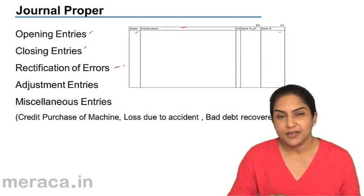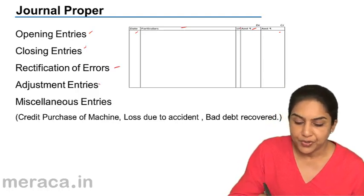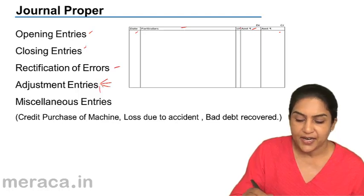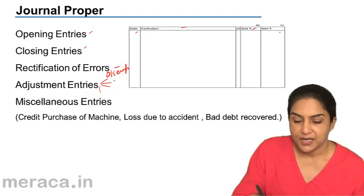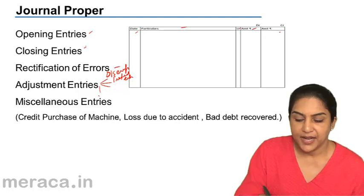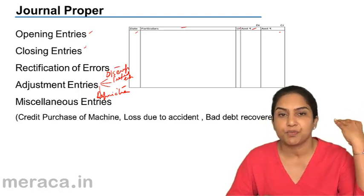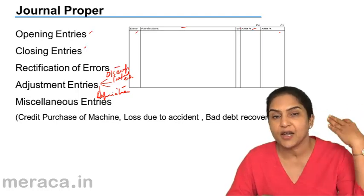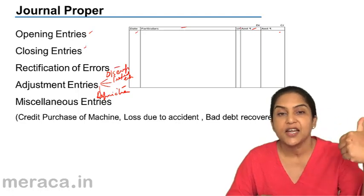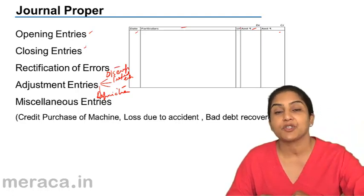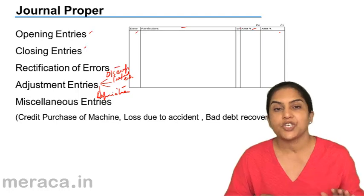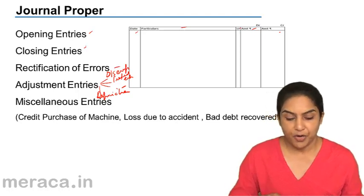Adjustment entries: at the year end, usually there are some adjusting entries like entries for outstanding expense, prepaid expense, depreciation, etc. All these are called adjustment entries. Outstanding expense, prepaid expense, accrued income, income earned in advance, depreciation — these are some examples of adjustment entries which are made through the journal proper.